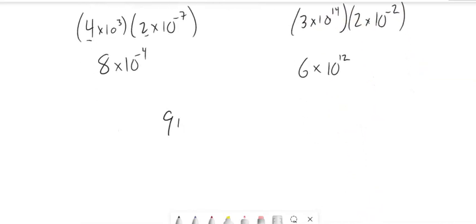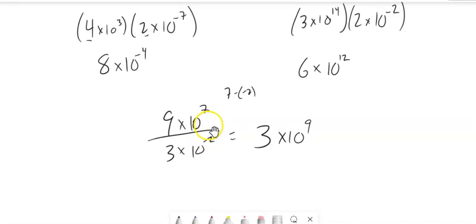And I can divide with it too. Like 9 times 10 to the seventh divided by 3 times 10 to the negative 2. 9 divided by 3 is 3. 10 to the seventh divided by 10 to the negative 2. 7 minus negative 2, that negative pops up. So that would actually be 10 to the ninth.